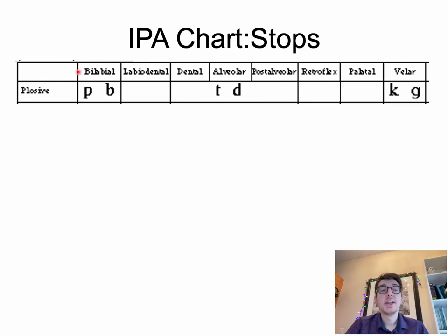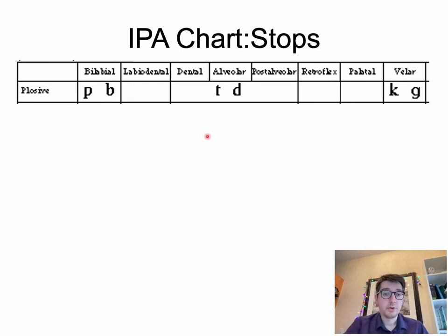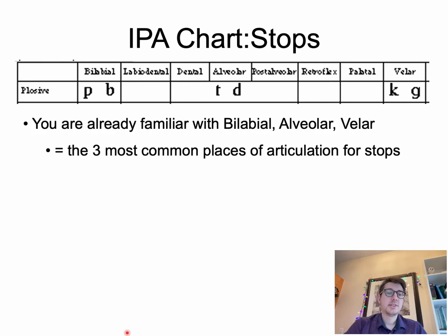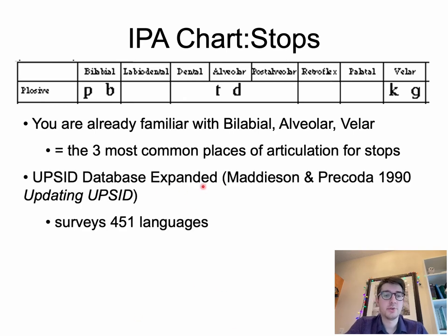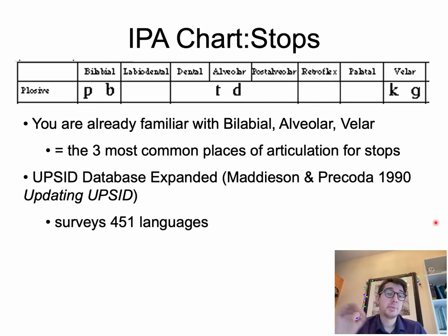We will go through stops by listing out possible places of articulation. Bilabial stops are made with both lips; alveolar stops are made by the tip of the tongue hitting the roof of the mouth; velar stops are made by the back of the tongue hitting the velum. These three are the most familiar and most common places of articulation for stops, according to the updated UPSID database — the UCLA Phonological Segment Inventory Database.